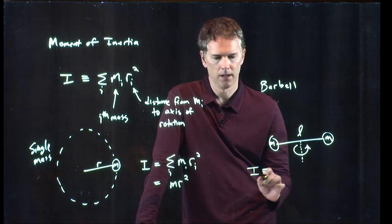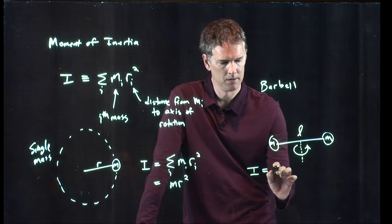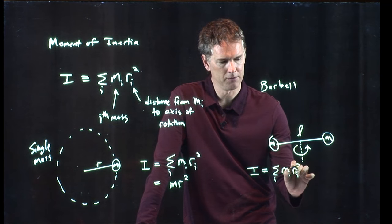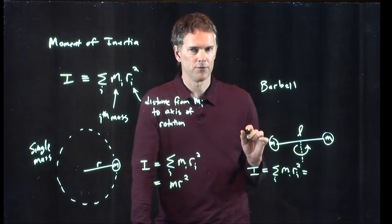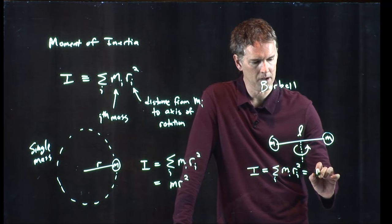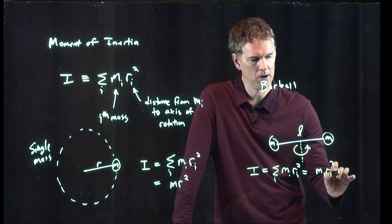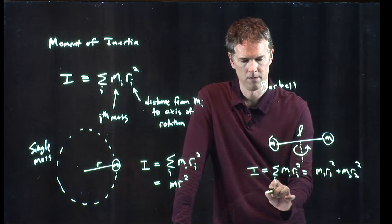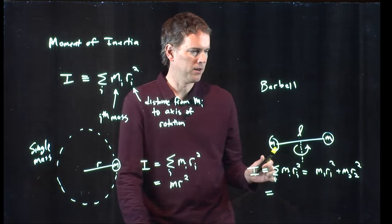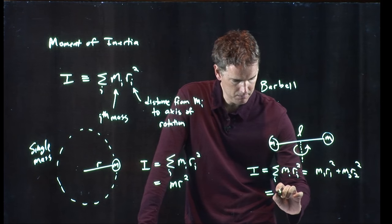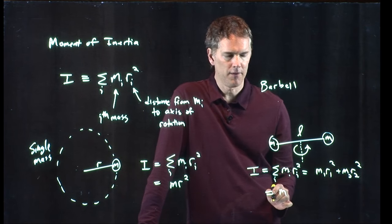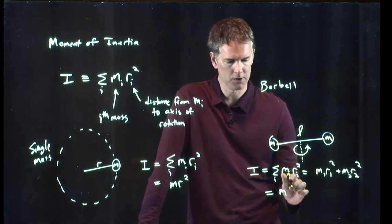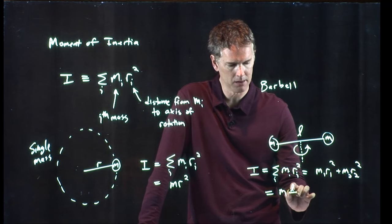All right, it's the summation of m sub i r sub i squared. We only have two particles here, so it's m1 r1 squared plus m2 r2 squared. But I know what each mass is, it's just m. And in fact, the radius, how far is that mass from the axis of rotation? That's just half the length.